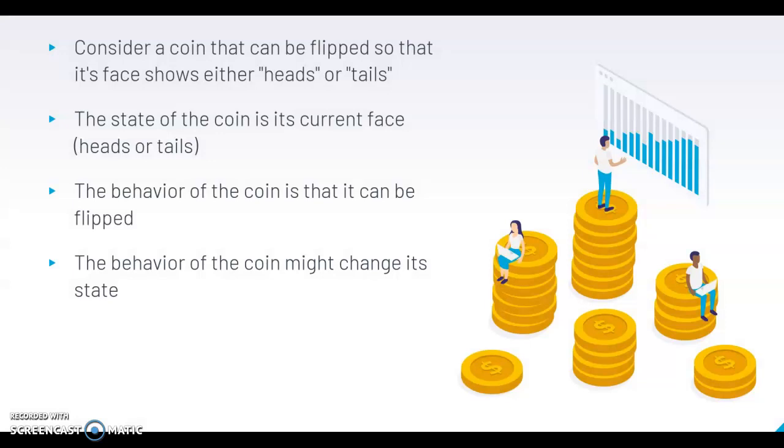Consider a coin that can be flipped so that its face shows either heads or tails. The state of the coin is its current face, whether it's heads or tails. The behavior of the coin is that it can be flipped. The behavior of a coin might change its state. For example, if our coin was heads up and we flipped it and it changed to be tails as its face, that is an example of a behavior changing the coin's state.